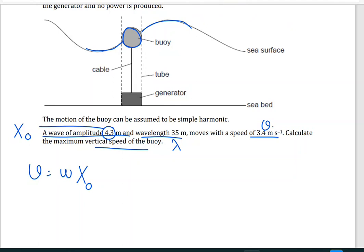I have to find omega. Omega is 2 pi times the frequency times the amplitude. How can I find the frequency? Frequency is velocity over lambda. The velocity is 3.4, lambda is 35, and this will give us 0.097 hertz.